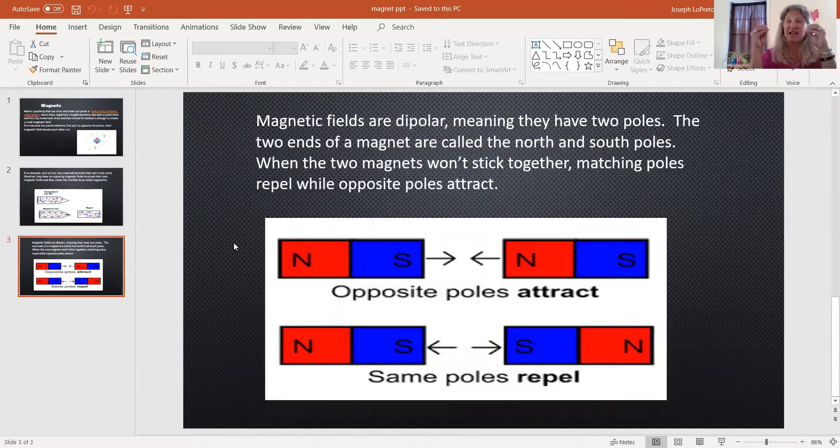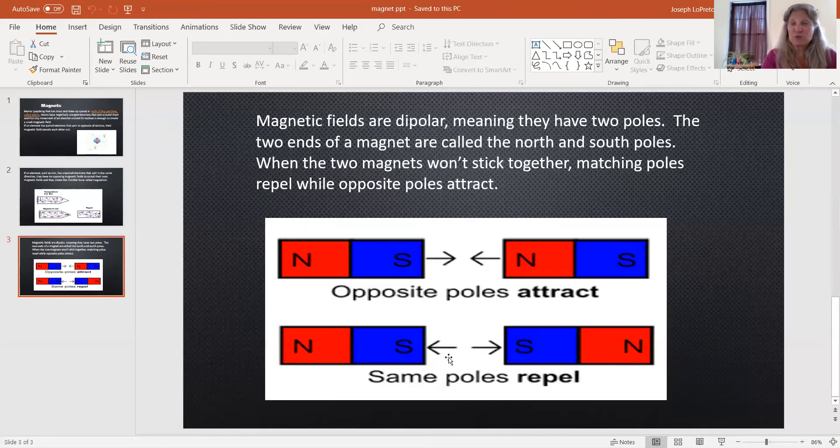Now, if you've ever taken magnets together and you try and put them together, sometimes they'll stick and sometimes they move apart. So opposites attract. If you have a south pole and a north pole, they're going to stick together. But if they're pushing apart, same poles, north and north or south and south, they're not going to stick together.